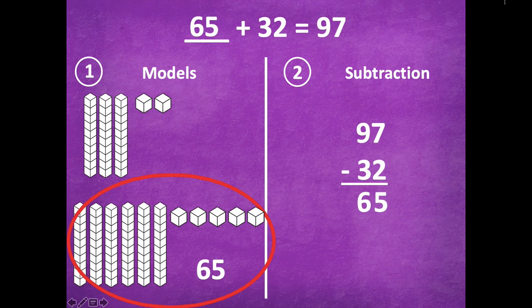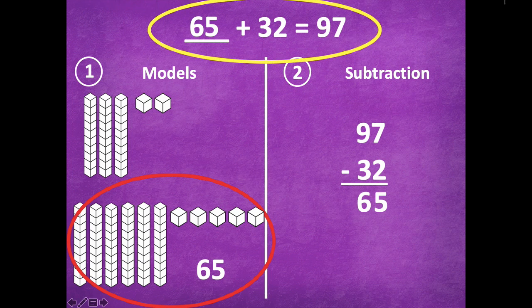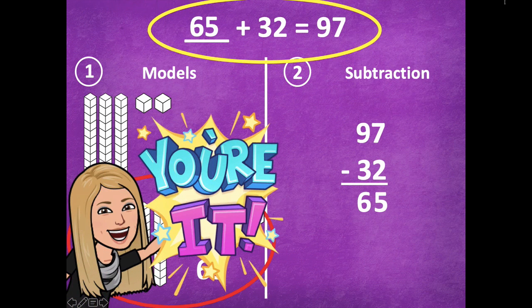So look, check that out friends, 65 is our missing addend. What I want you guys to do is I want you to pause and solve, or double check your work using addition to make sure that our two addends total or have a sum of 97. So go ahead and pause the video. You're going to add 65 and 32 and see if you get 97, and then click play when you're ready to go over it together.